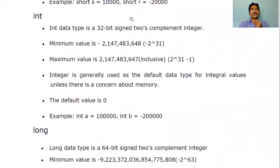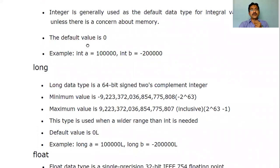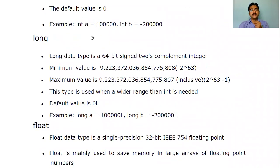Next is integer — it is four bytes, which is 32 bits. The range is -2^31 to 2^31 - 1. The default value for integer is zero. You can write a small Java program to practice all data types.